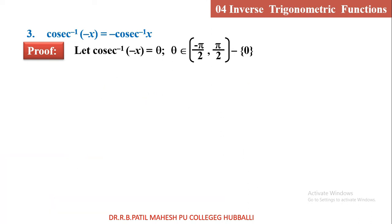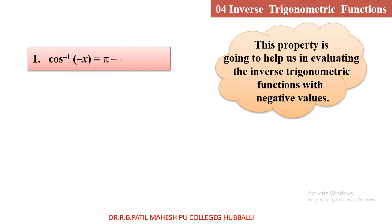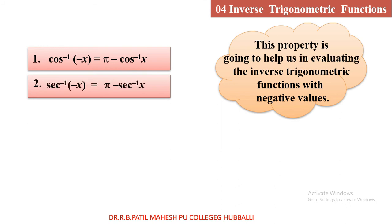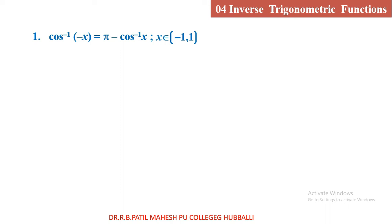We will go to the next property. This property is also going to help us in evaluating inverse trigonometric functions with negative values, but there are another three: cos inverse of minus x equals pi minus cos inverse x, sec inverse of minus x equals pi minus sec inverse x, cot inverse of minus x equals pi minus cot inverse x. You can compare these to the previous three properties — here an extra term pi minus is coming, which we will see in the proof. The first one: cos inverse of minus x equal to pi minus cos inverse x, where x belongs to minus 1 to 1.